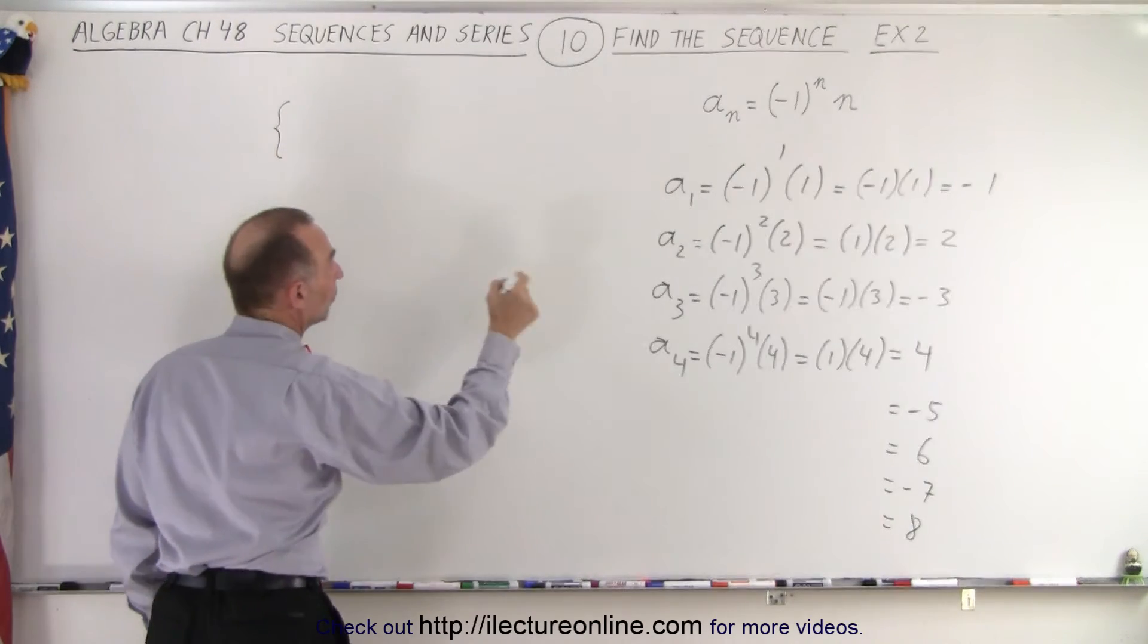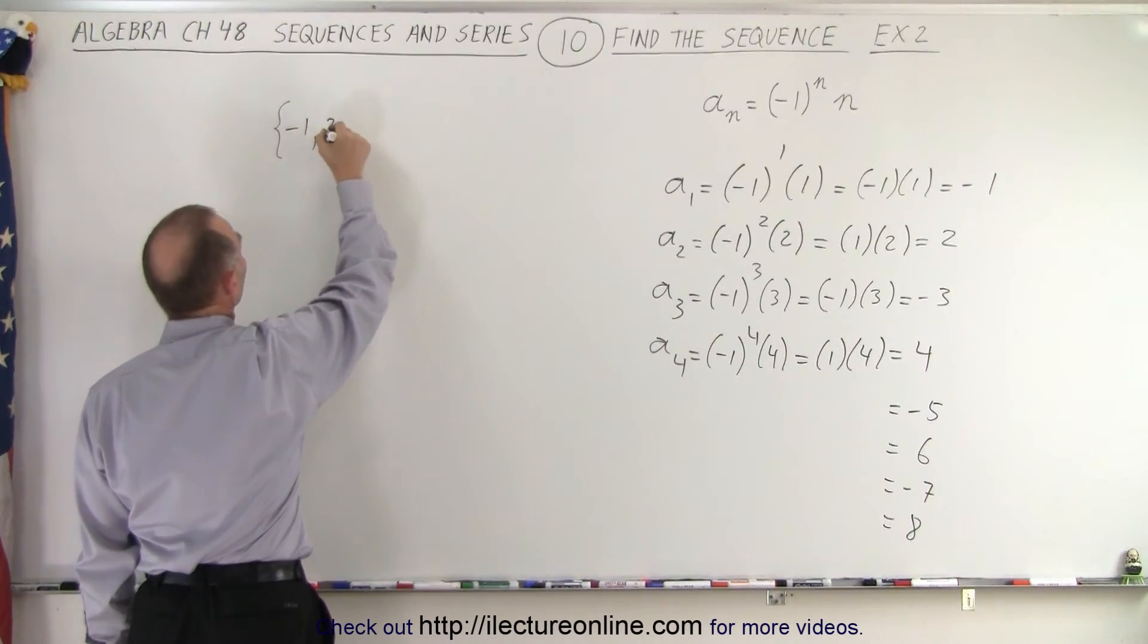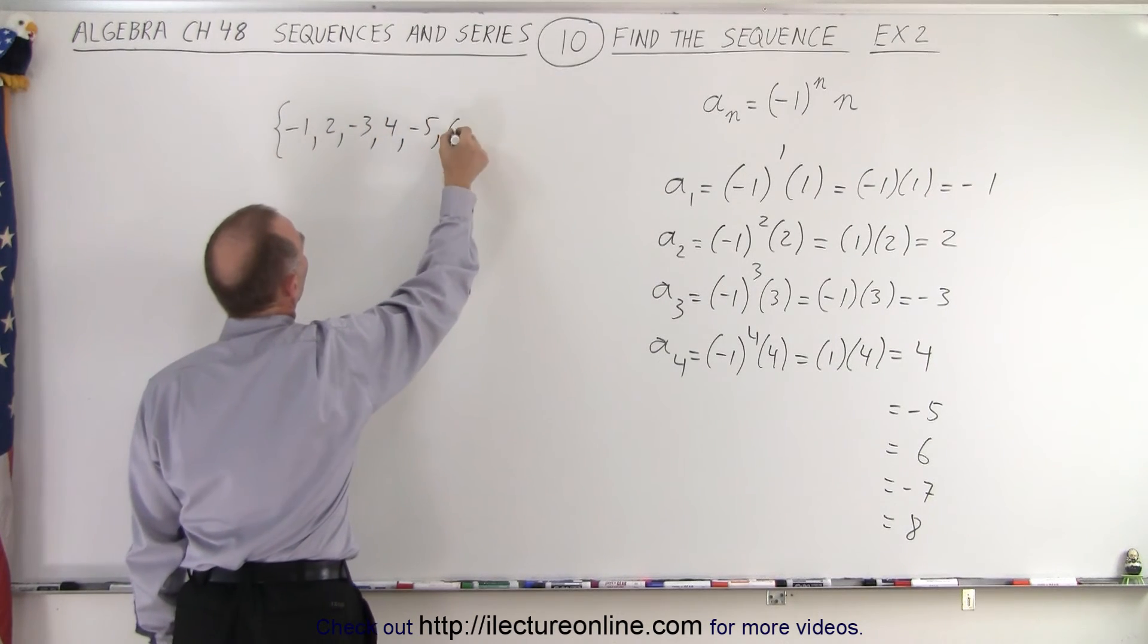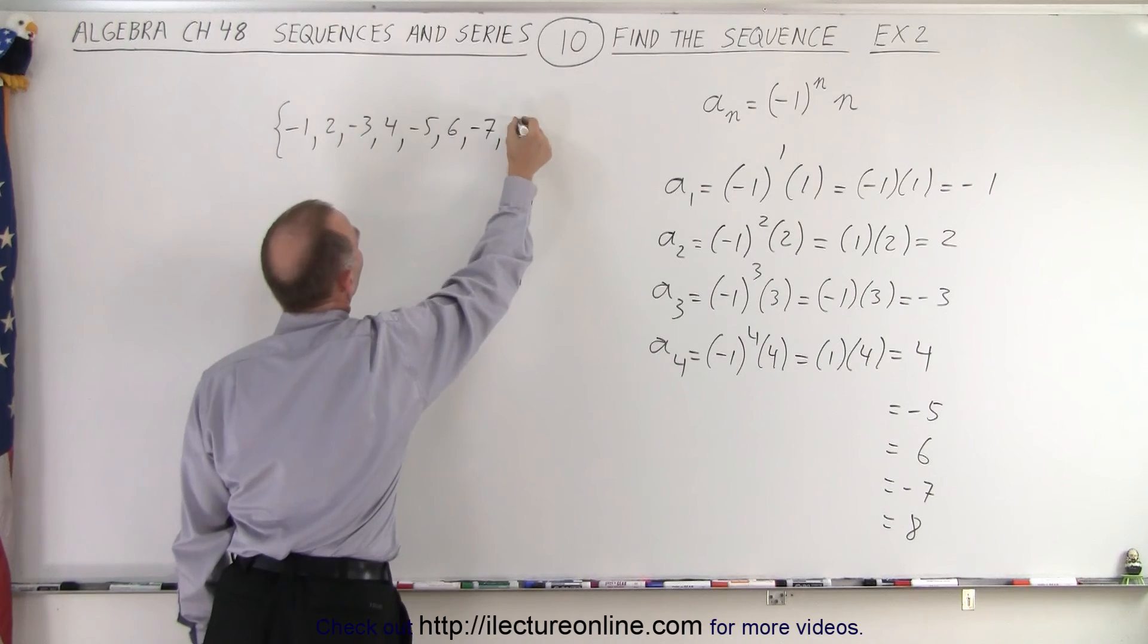Then if you want to write what the sequence is, the sequence therefore becomes negative one, positive two, negative three, positive four, negative five, positive six, negative seven, positive eight, and the pattern continues to slide out forever if it's an infinite sequence, and that is how it's done.